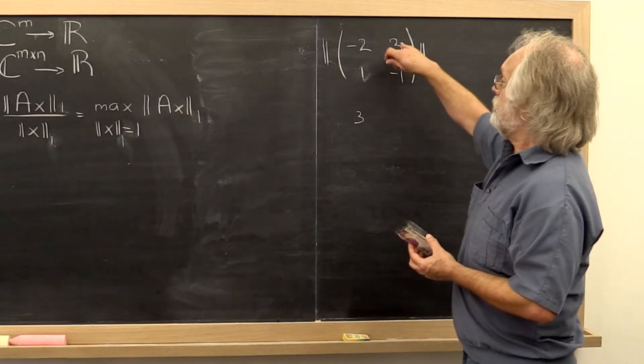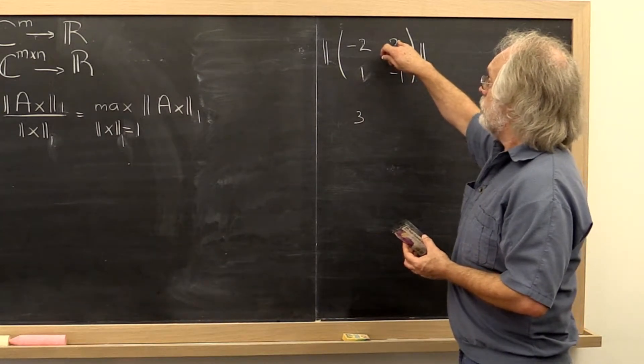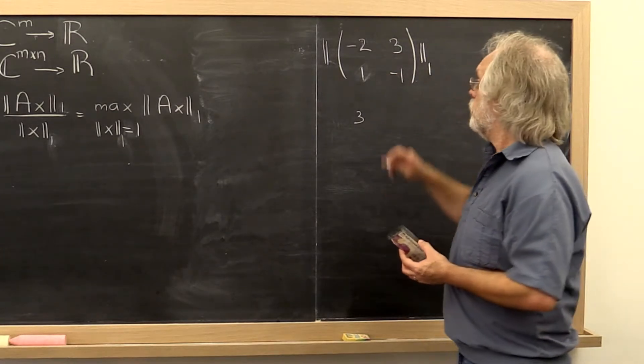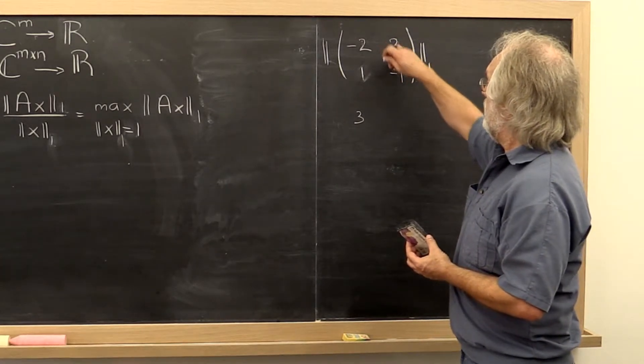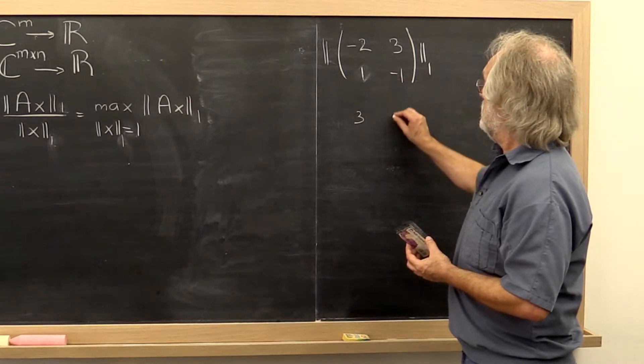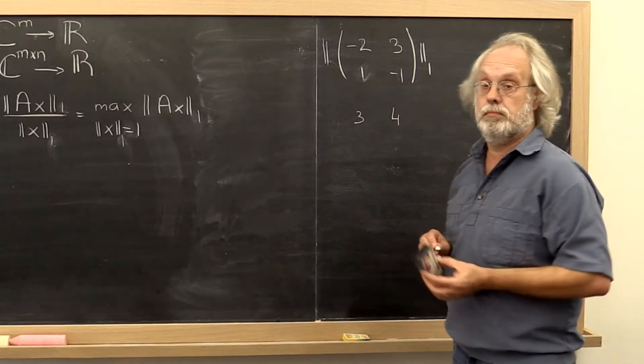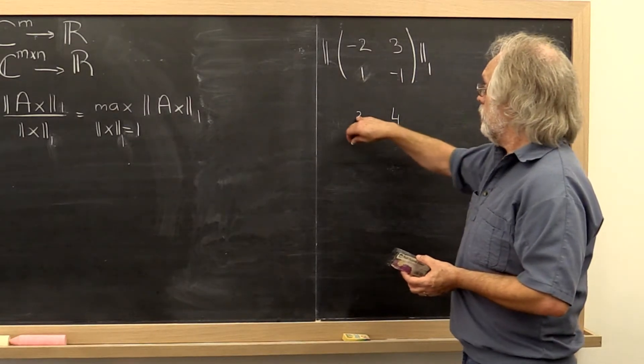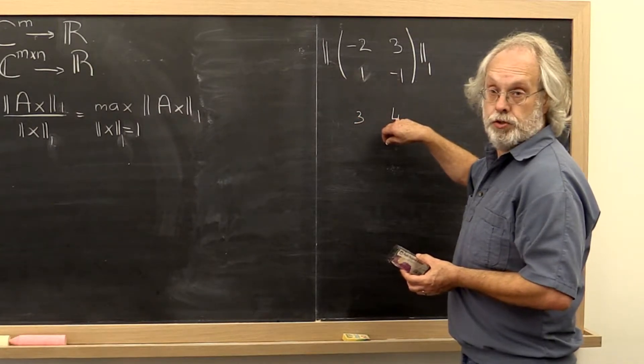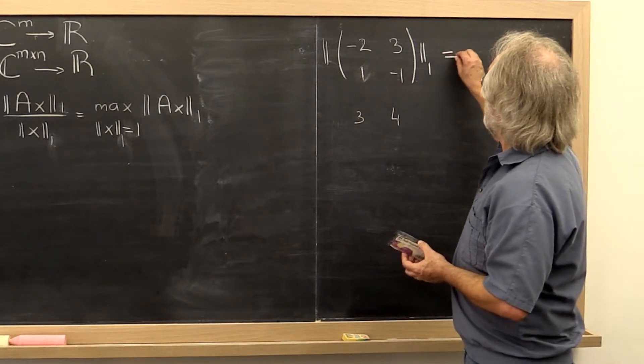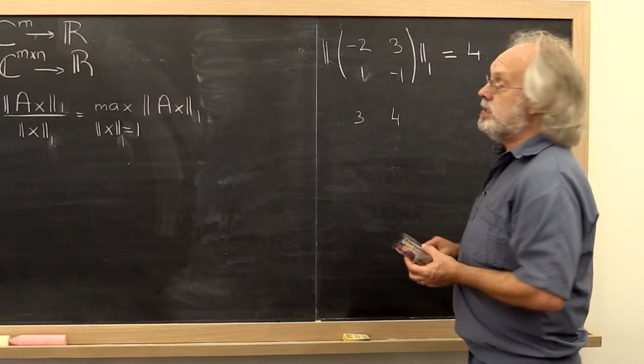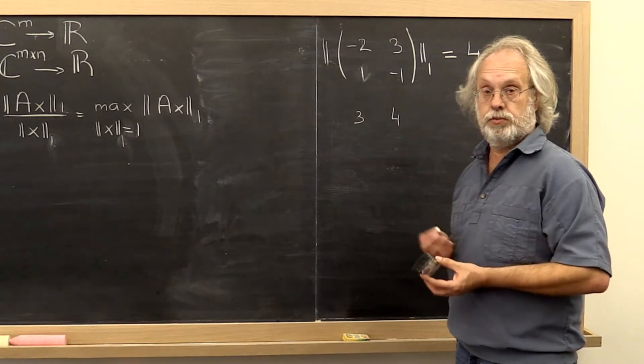You compute the vector 1 norm of the second column. What is that? 3 plus 1 is 4. And then you look at the maximum of those two. And the maximum of those two is the 1 norm of the matrix.